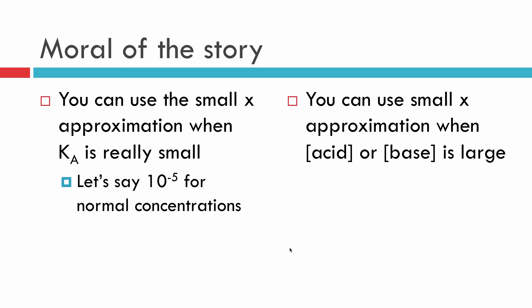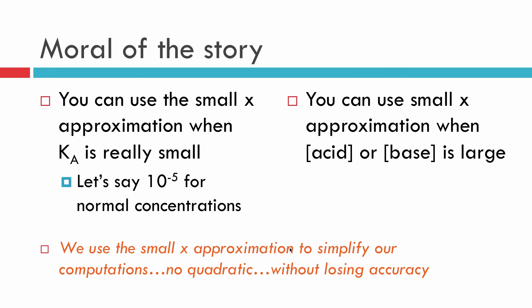Let's summarize everything. You can use the small x approximation when Ka is really small, let's say 10 to the minus 5th. You can also use it when the acid or base concentration is large. And large is relative here. It means 0.1 or 0.2, 0.09, something like that, or 1.4. Those are all good and what we would call large concentrations. So why do we use this thing? Just recall that we're using this small x approximation to simplify our calculations. We're not going to use the quadratic and we're not going to lose any accuracy.